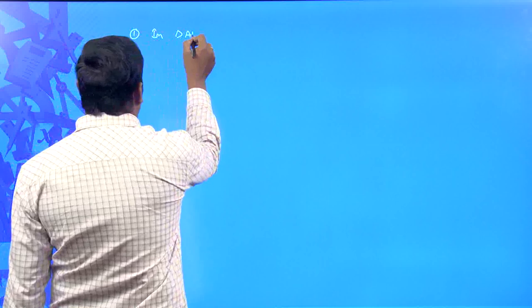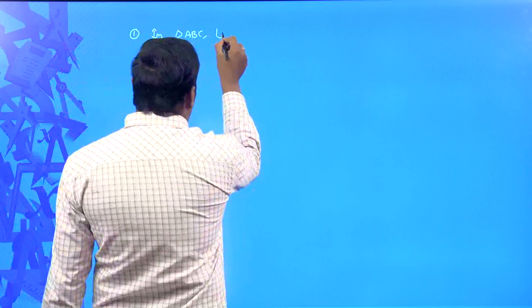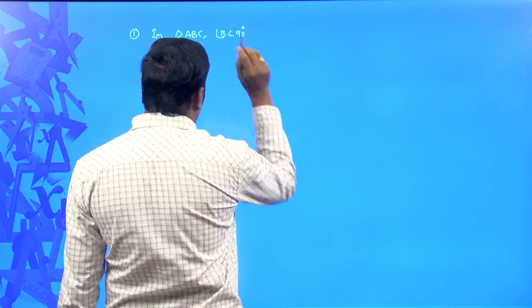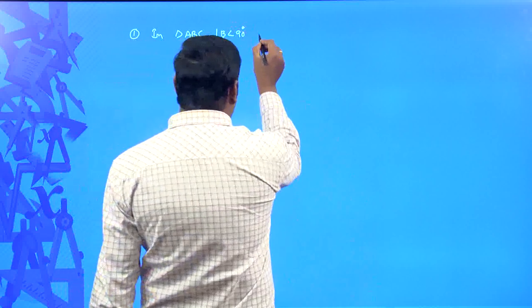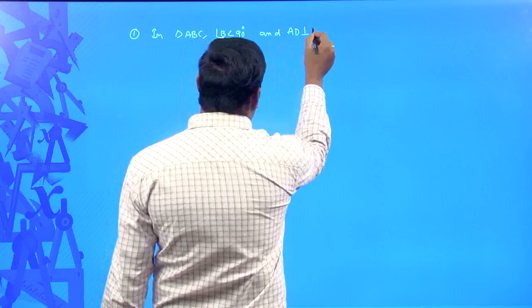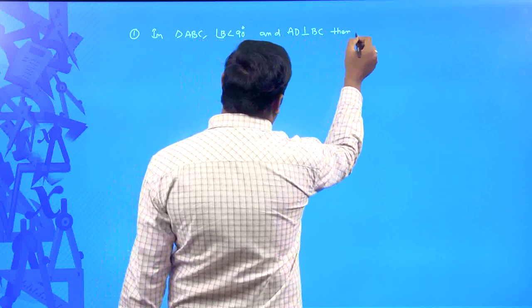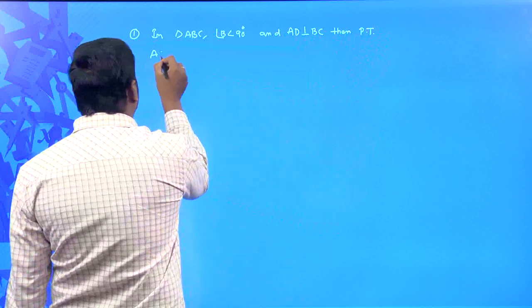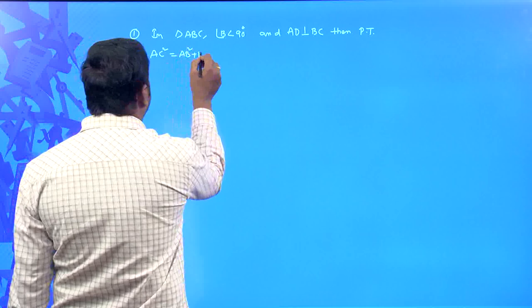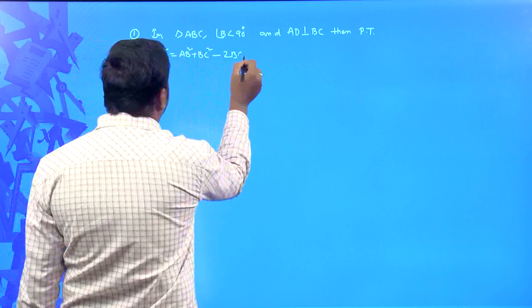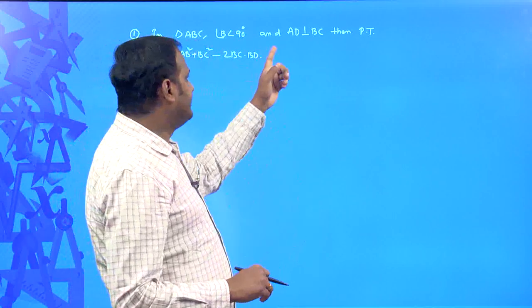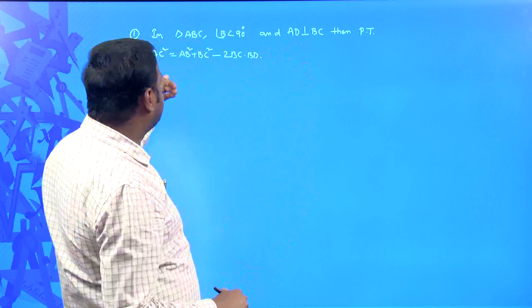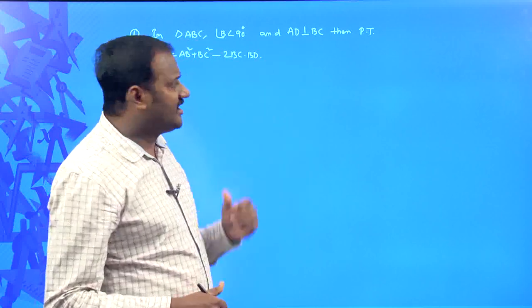The very first theorem: in triangle ABC, angle B is less than 90 degrees — meaning angle B is an acute angle — and AD is drawn perpendicular to BC. Then prove that AC² = AB² + BC² − 2BC·BD.